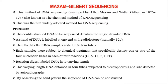Now we can see the procedure steps involved in Maxim-Gilbert sequencing. First, we have to take the double-stranded DNA that is to be sequenced, and denature it into single-stranded DNA. That single-stranded DNA is then labeled with a radioisotope — normally P-32 is used for radio-labeling.